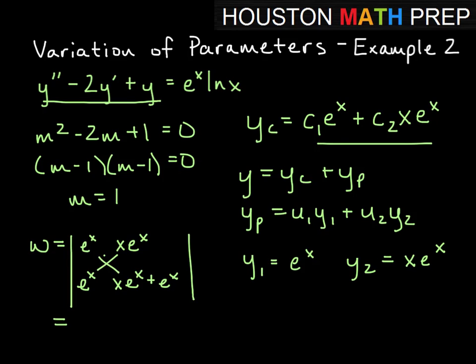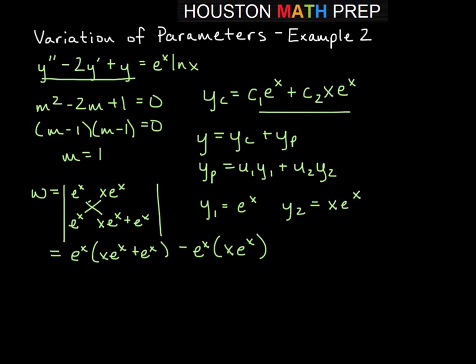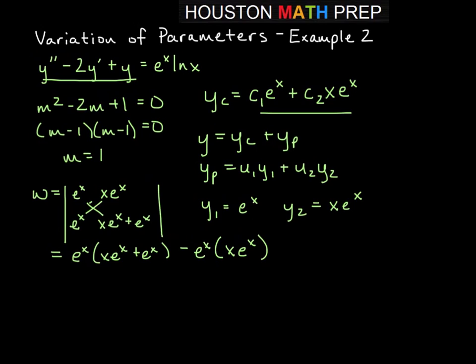And so when we work this out, here we'll get e to the x times x e to the x plus e to the x minus e to the x times x e to the x. And that then gives us x e to the 2x plus e to the 2x when we distribute there, and then we get minus x e to the 2x. So here we have terms that add to zero, giving us just e to the 2x for our Wronskian there.